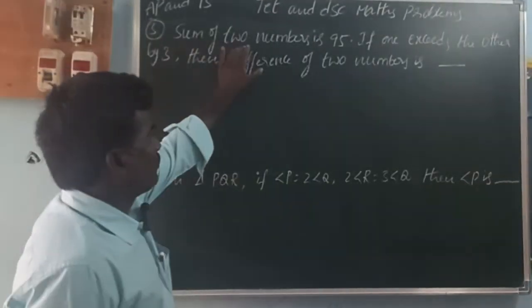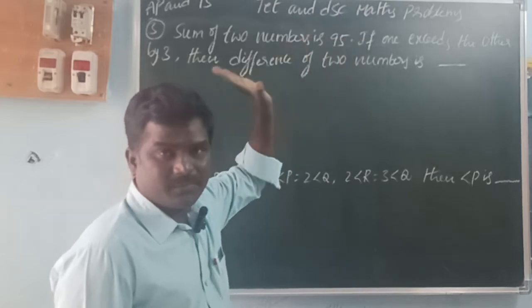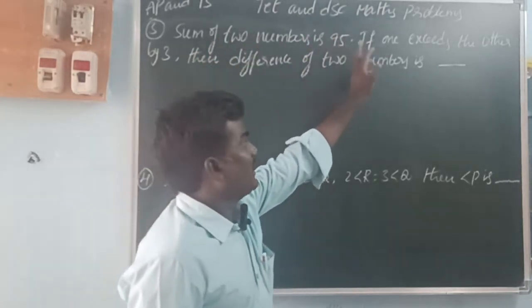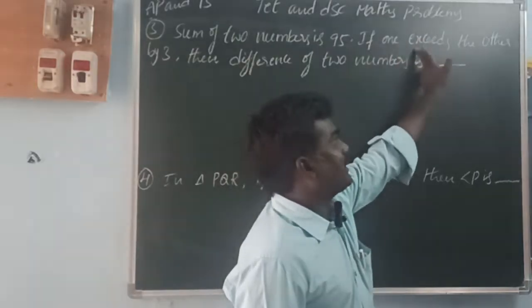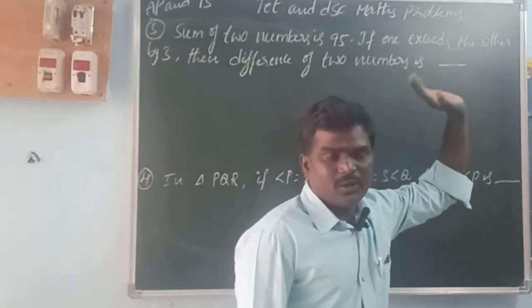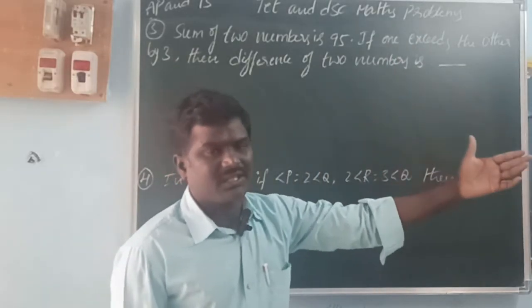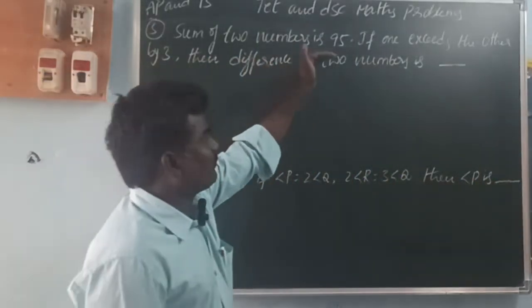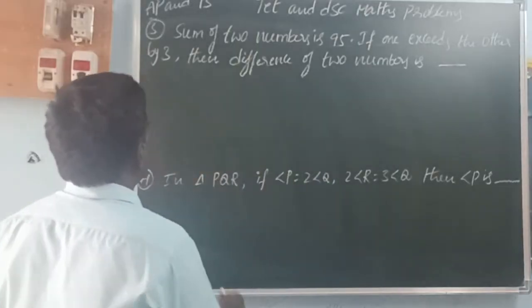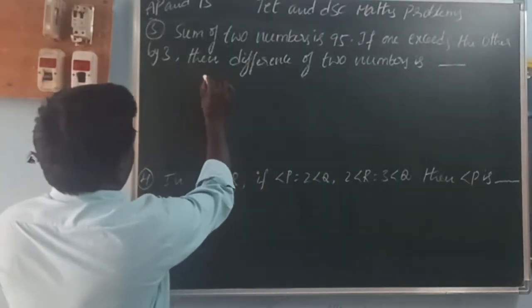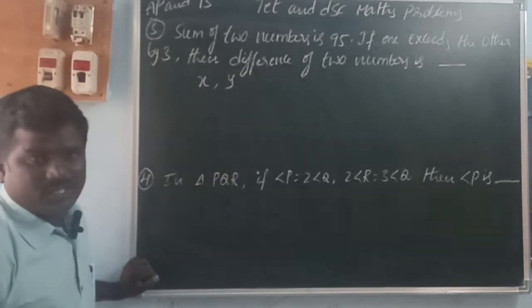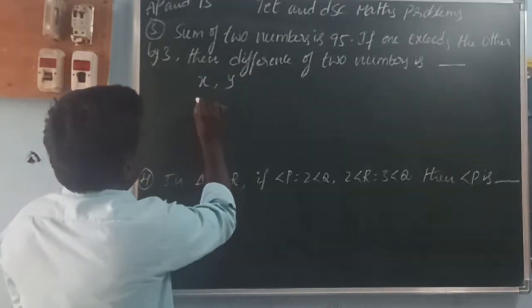Next problem: Sum of two numbers is 95. If one number exceeds the another number by 3, what is the difference of two numbers? Let the two numbers be x and y.